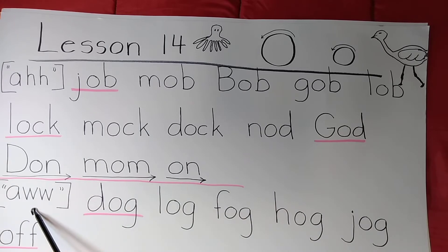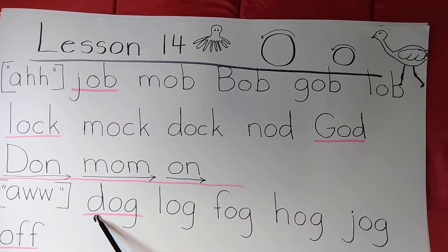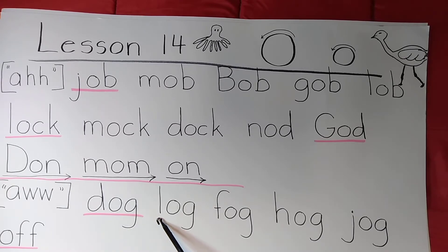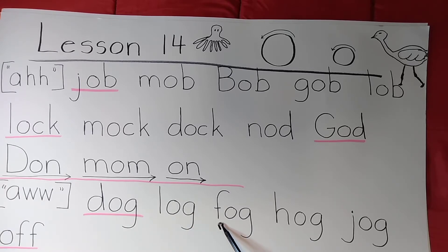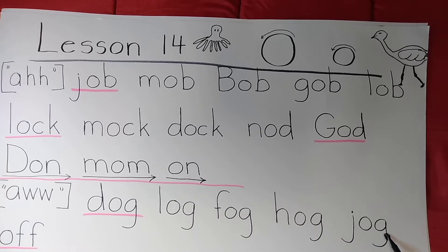Now some words that have the aw-ostrich sound of O, and this first line also has rhyming words. D-O-G — dog. L-O-G — log. F-O-G — fog. H-O-G — hog. J-O-G — jog.